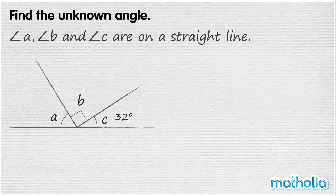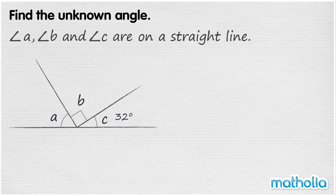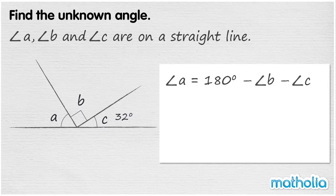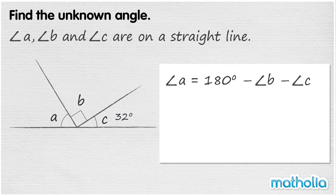Find the unknown angle. Angle A, angle B and angle C are on a straight line. We need to find angle A. Recall that the sum of the angles on a straight line is 180 degrees. So angle A is equal to 180 degrees minus angle B minus angle C.